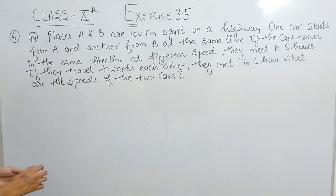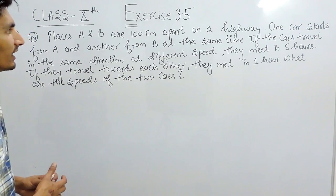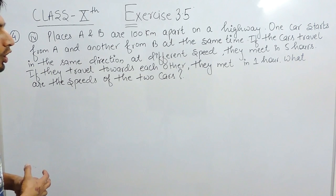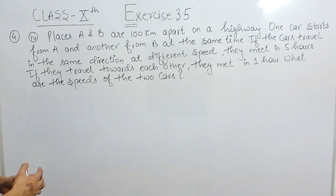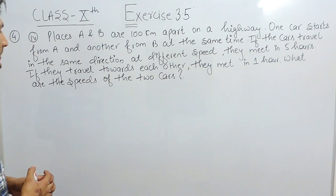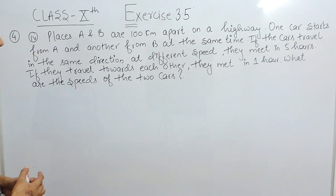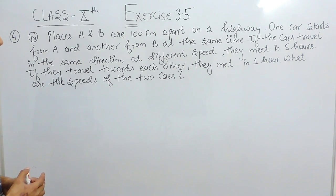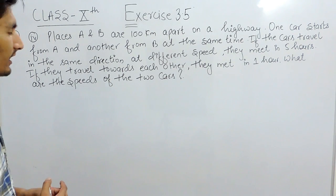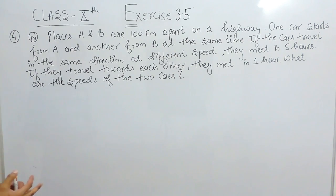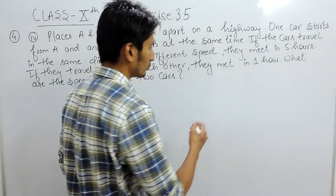The question says: place A and B are 100 km apart on a highway. One car starts from A and another from B at the same time. If the cars travel in the same direction at different speeds, they meet in 5 hours. If they travel towards each other, they meet in 1 hour. What are the speeds of the 2 cars?